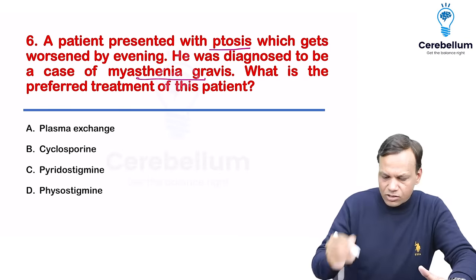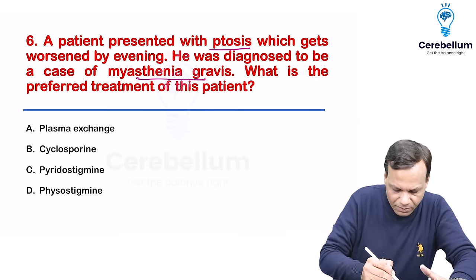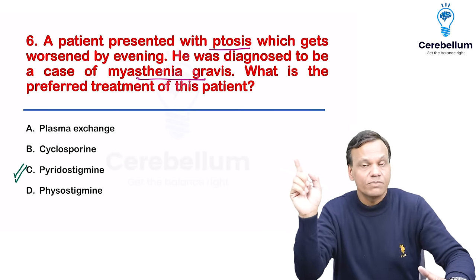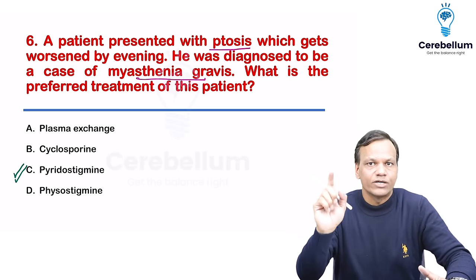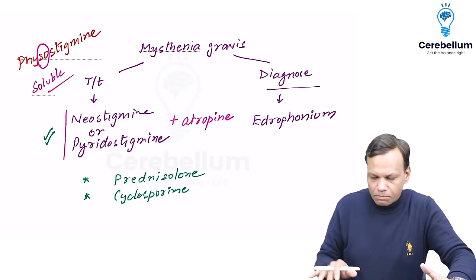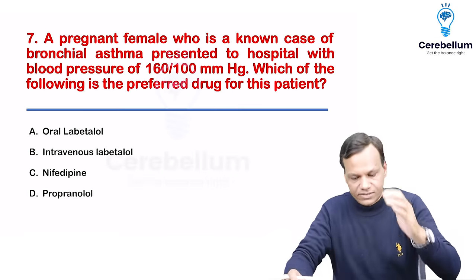Coming to the options, the drug used for treatment of Myasthenia Gravis is pyridostigmine — read carefully, not physostigmine. It is pyridostigmine.